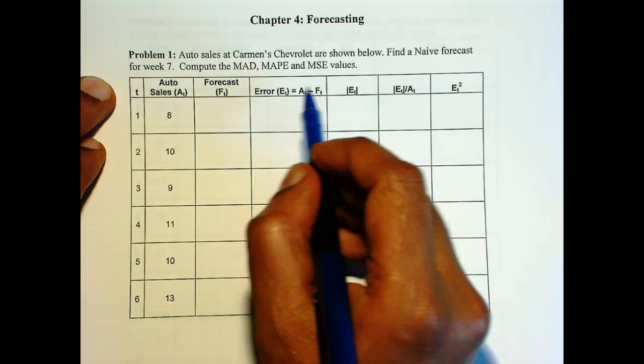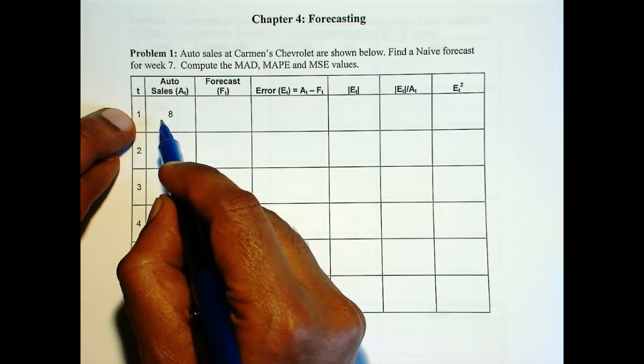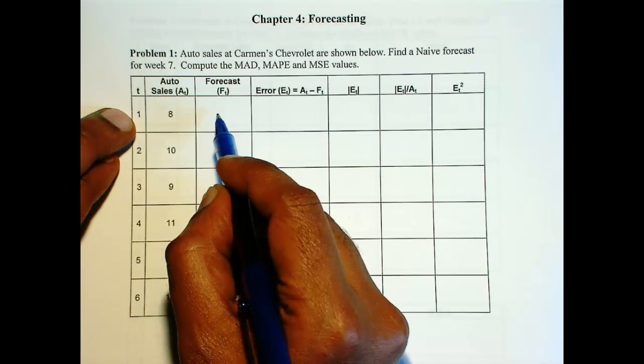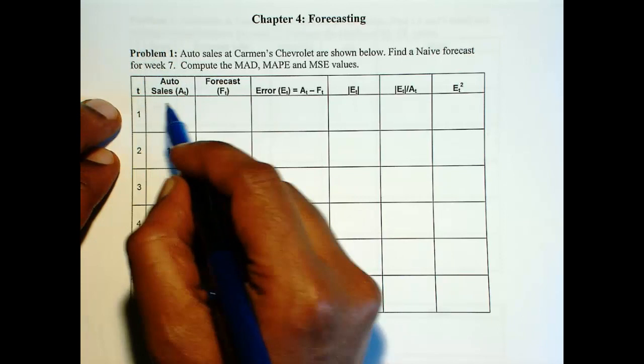Now remember, naive forecast is: forecast for a given time period is the actual value of the previous time period. So since we don't know the actual value before t equals 1, the forecast can only start from period number 2.